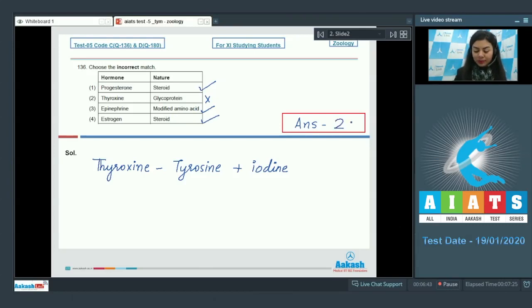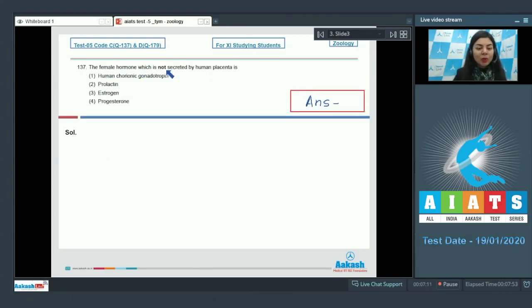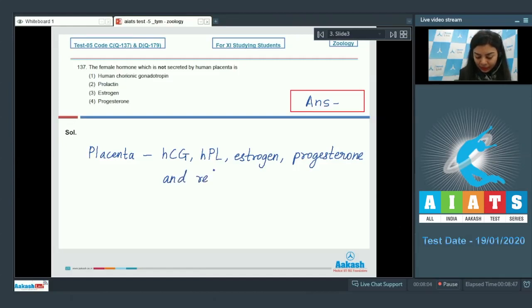Question 137: The female hormone which is not secreted by human placenta is - human chorionic gonadotropin, prolactin, estrogen, progesterone. The hormones which are secreted by placenta are: hCG, that is human chorionic gonadotropin; hPL, that is human placental lactogen; then estrogen, progesterone, and relaxin.